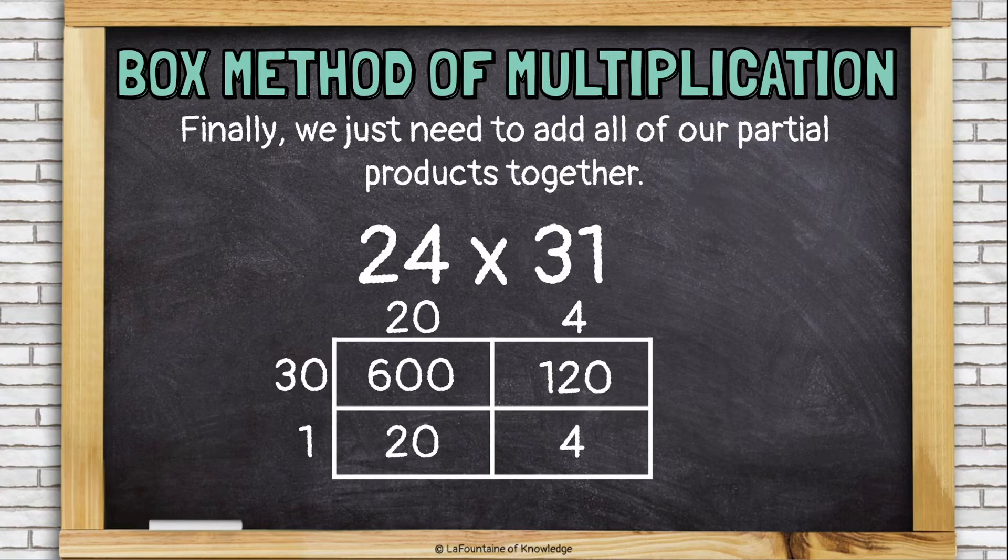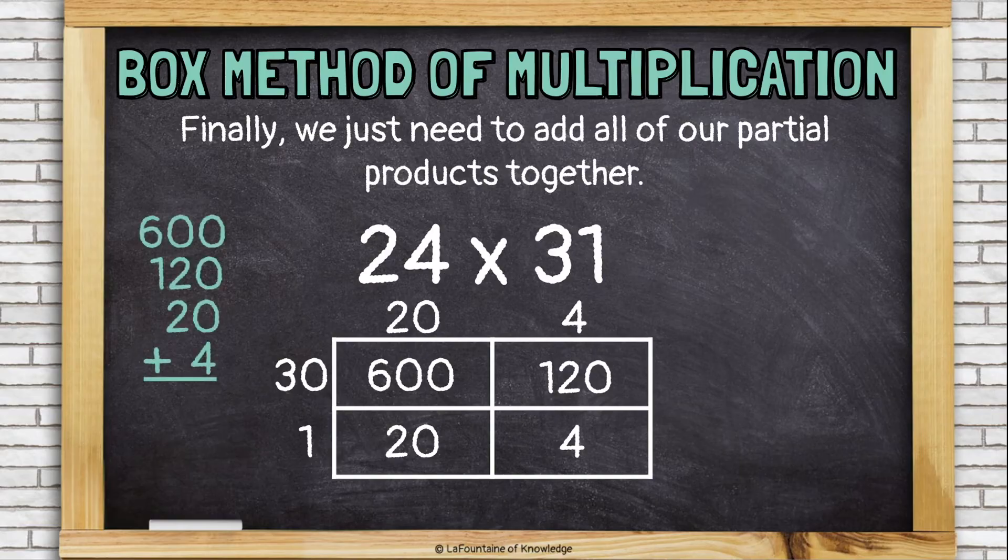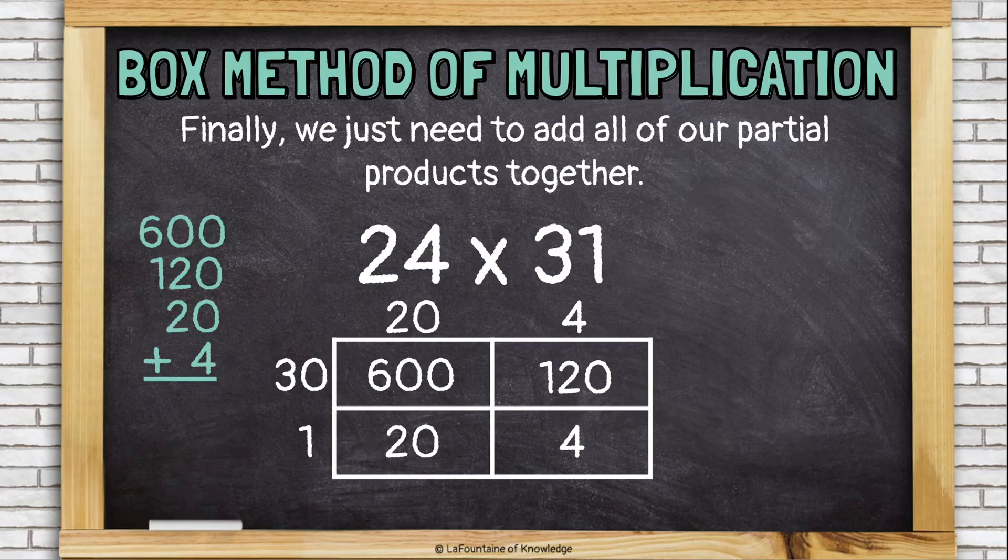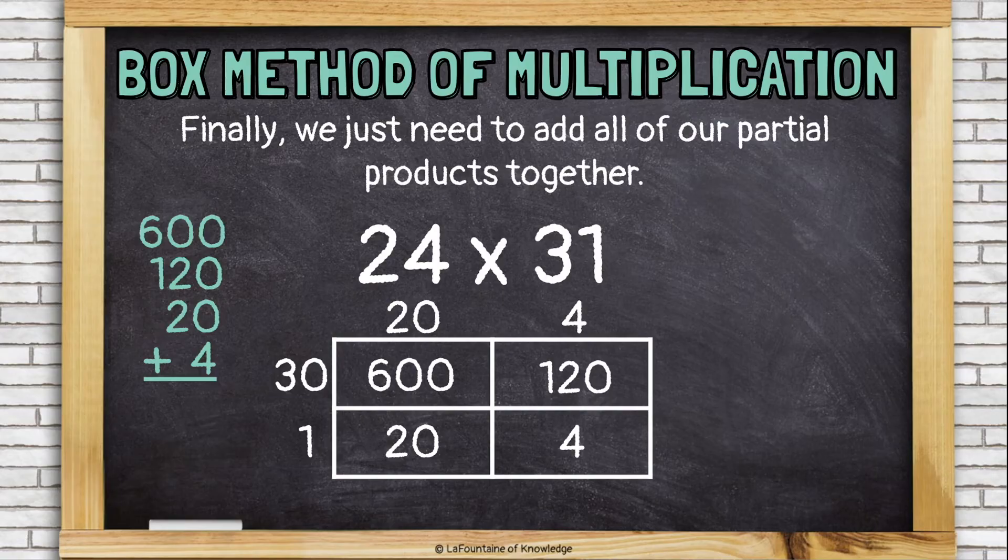Finally, we just need to add all of our partial products together. So, that's all 4 numbers from these boxes. And I like to stack them, line them up with the largest number on top and the smallest number on the bottom. If it's easier for you to add the numbers just 2 at a time, then you should use that strategy. I do okay adding all 4 numbers at once. Some people have trouble with that.